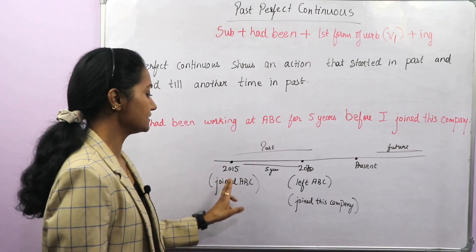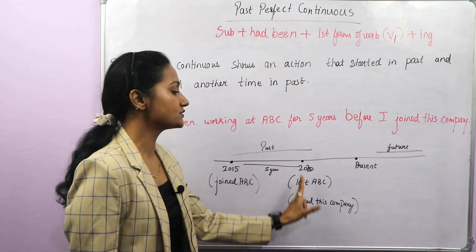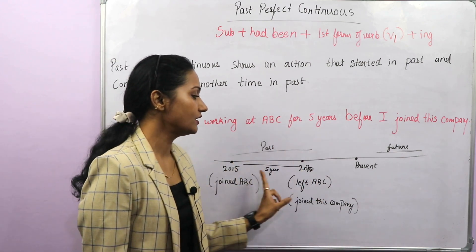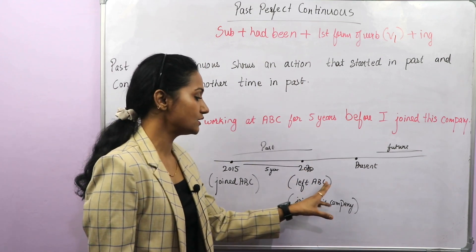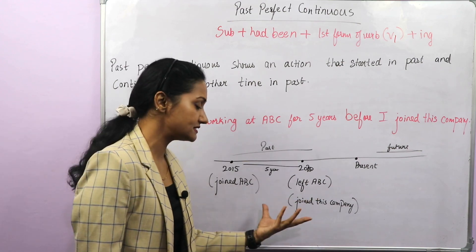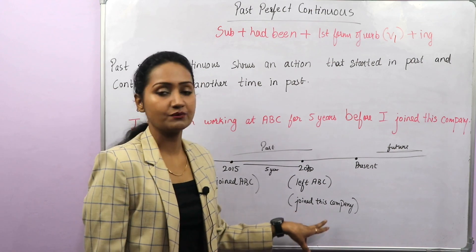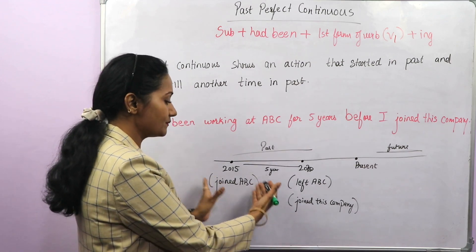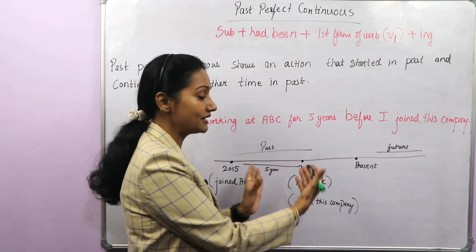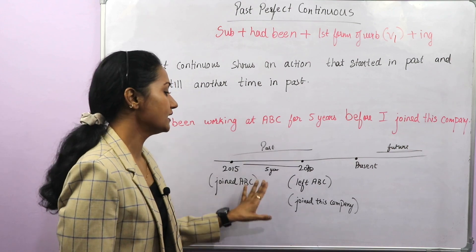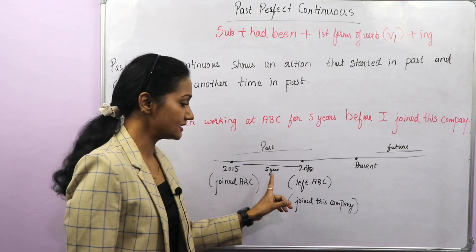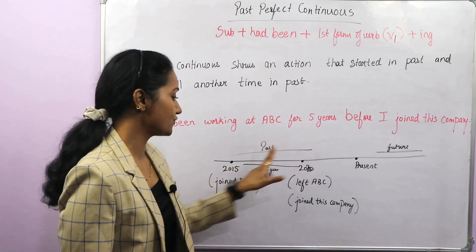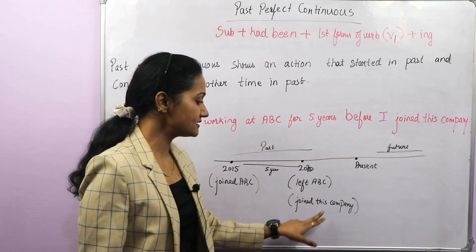This action which started in 2015 continued till 2020, which is again a time in past. We are not talking about present; we are talking about past only, but there is a duration. Now in 2020, when I left ABC, I joined this company — another action started. Basically an action started in past, it continued for a specific time in past only. That is why we call it past perfect continuous, because the action continued in past.